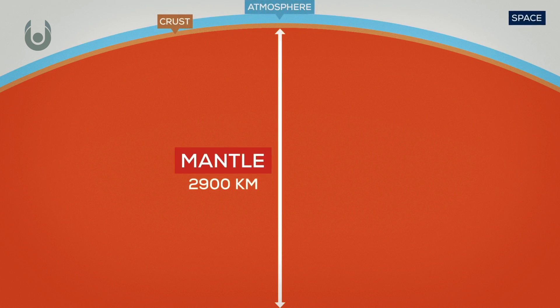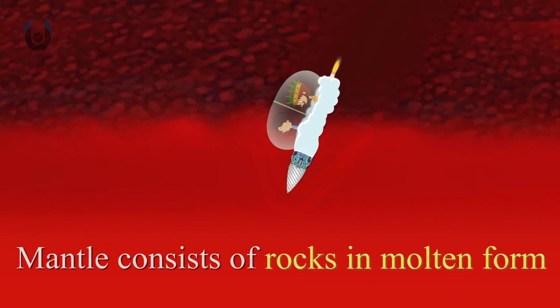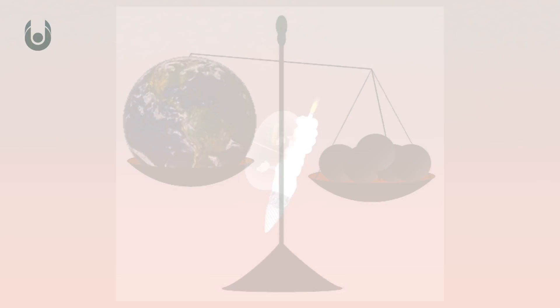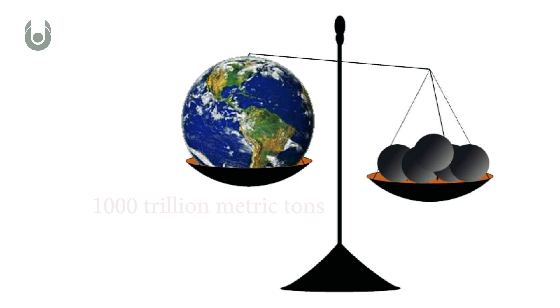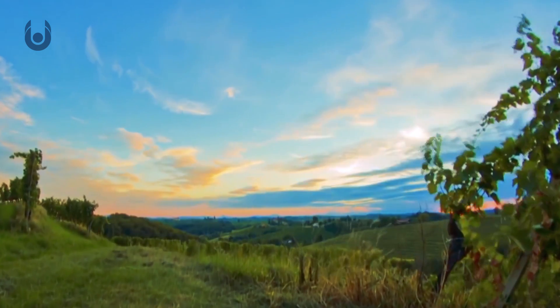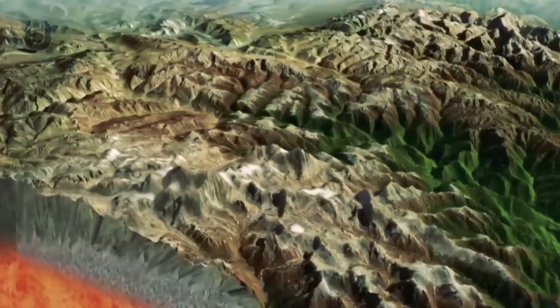The next layer you would reach is called the mantle. It has a depth of 1,800 miles and is made of a thick, solid rock substance that equals 85% of the total mass of earth. Speaking of mass, the earth weighs about 1,000 trillion metric tons.